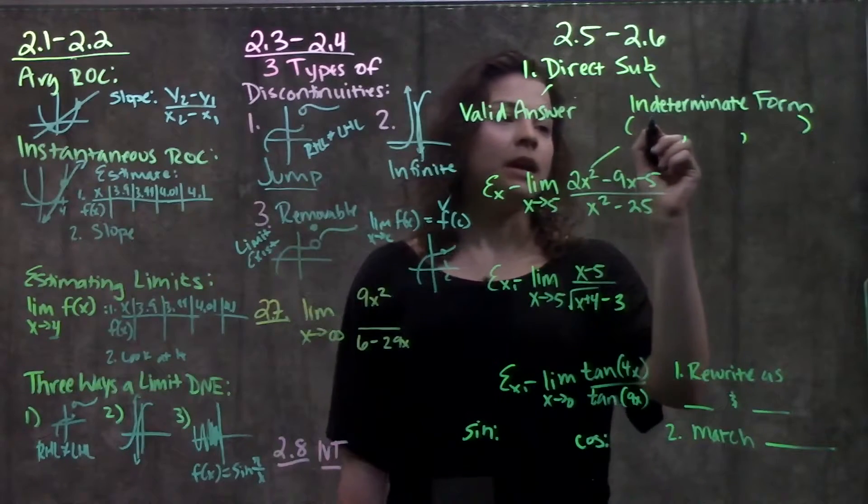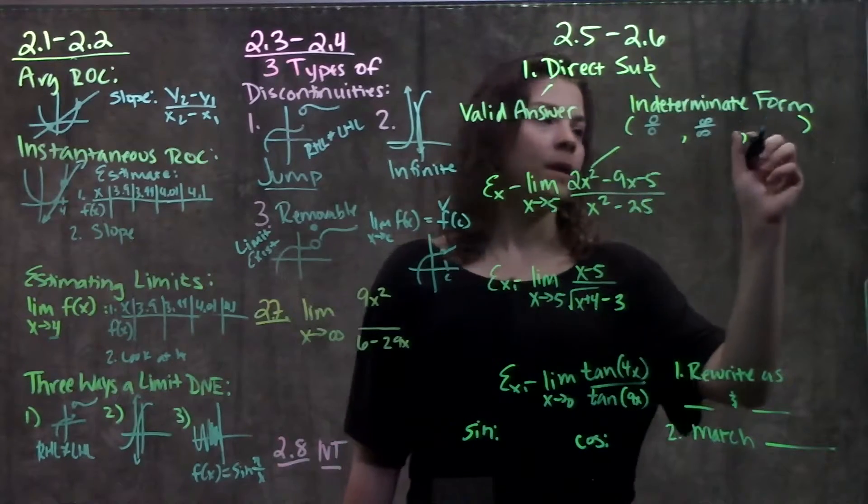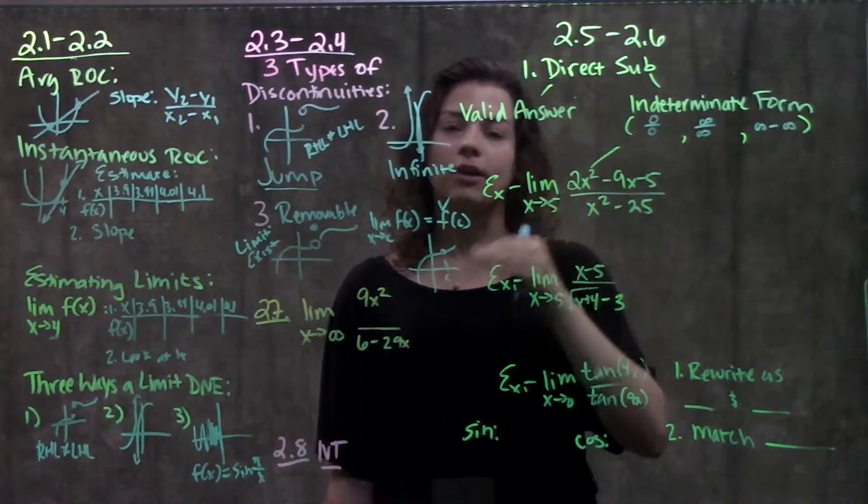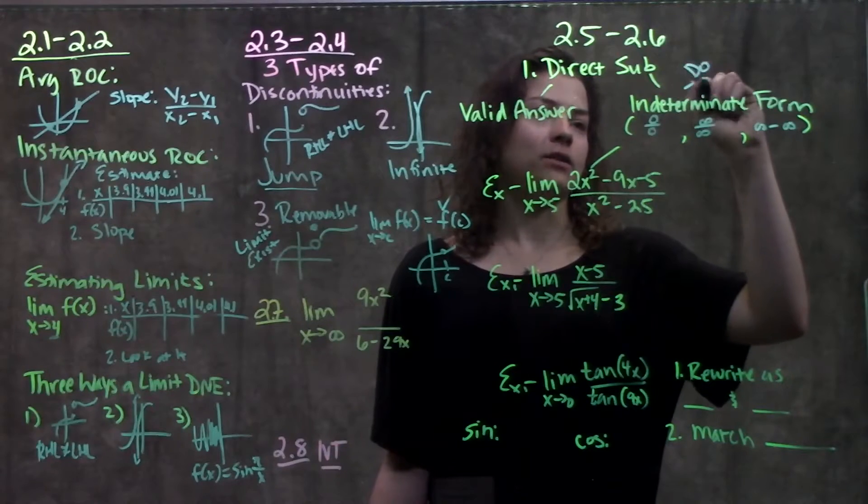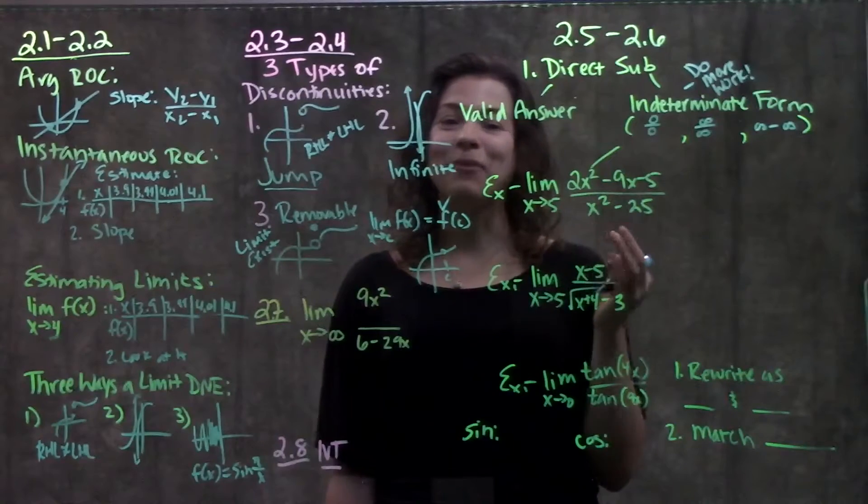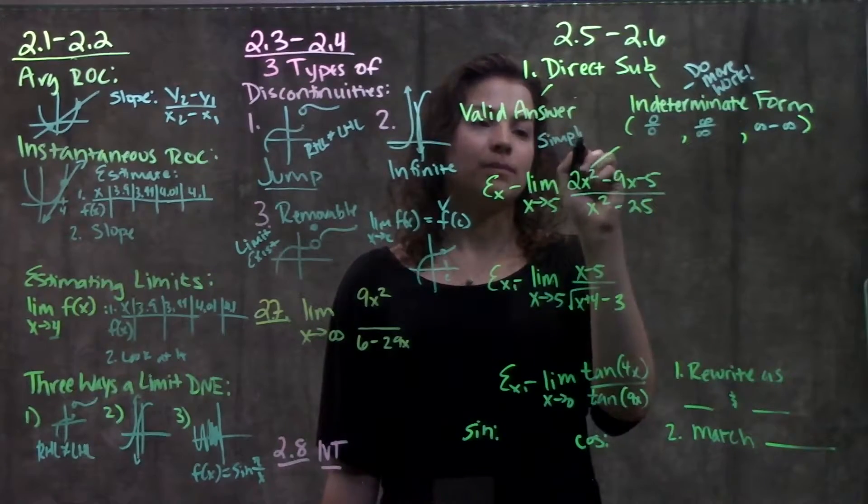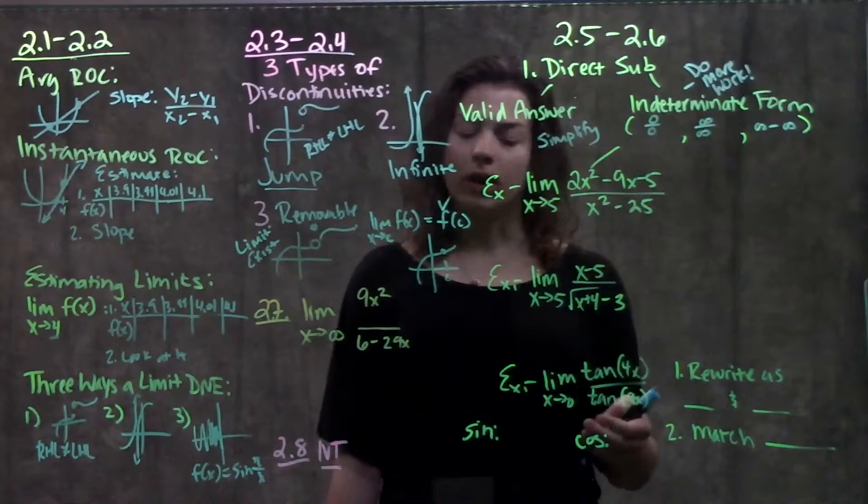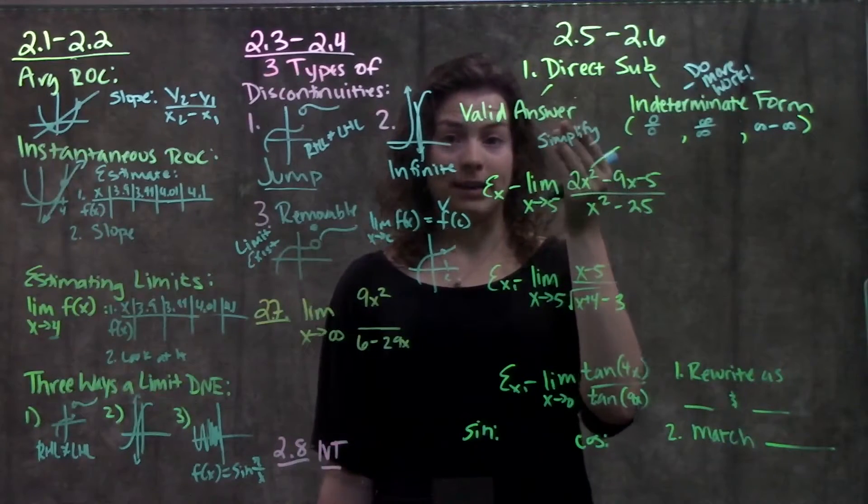But what is more likely to happen is you get something called an indeterminate form. Remember there's three types: either 0 over 0, infinity over infinity, or infinity minus infinity. If you get any of these values after you try direct substitution, that means indeterminate form, not valid answer, it means do more work. The type of work that we need to do for these problems is we're going to try to simplify the function. We try to simplify it, get a term to cancel out, or get it to match some identity, so that when we try direct substitution again, we'll get a valid answer.